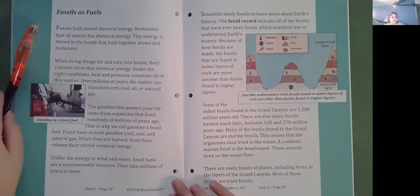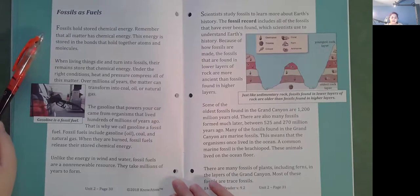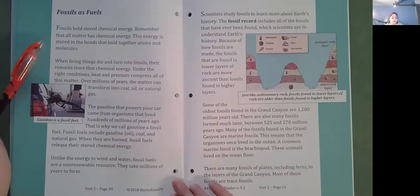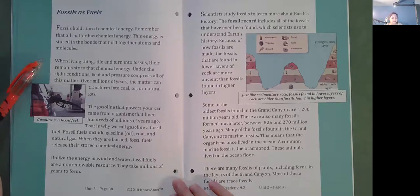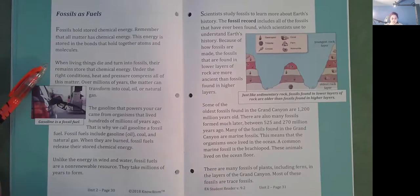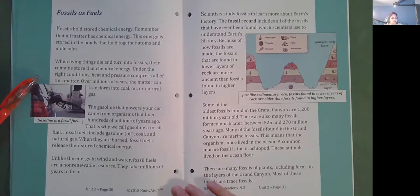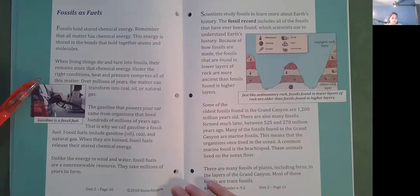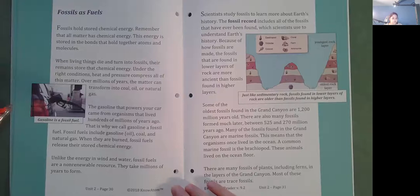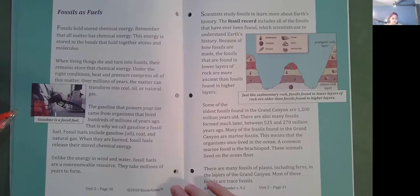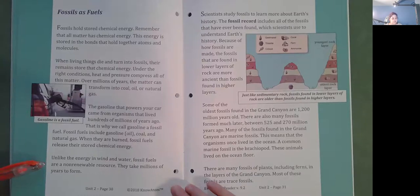Fossils as fuels. Fossils hold stored chemical energy. Remember that all matter has chemical energy. This energy is stored in the bonds that hold together atoms and molecules. When living things die and turn into fossils, the remains store that chemical energy. Under the right conditions, heat and pressure compress all of this matter. Over millions of years, the matter can transform into coal, oil, or natural gas. The gasoline that powers your car came from organisms that lived hundreds of millions of years ago. That is why we call gasoline a fossil fuel. Fossil fuels include gasoline or oil, coal, and natural gas. When they are burned, fossil fuels release their stored chemical energy. Unlike the energy in wind and water, fossil fuels are a non-renewable resource. They take millions of years to form.